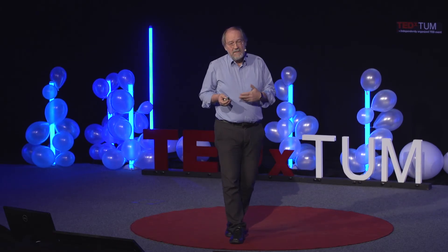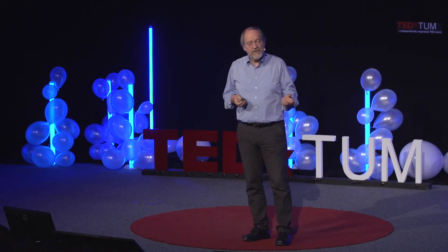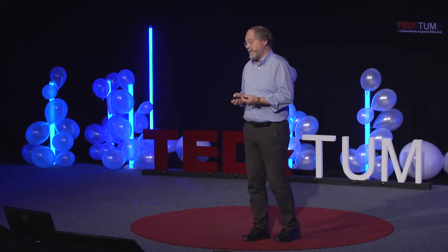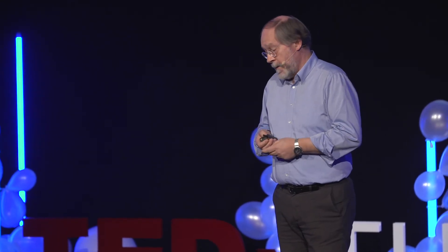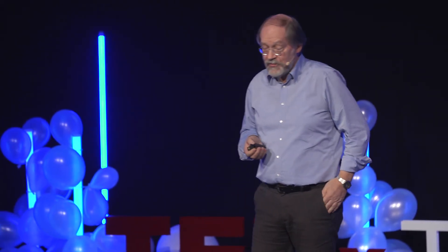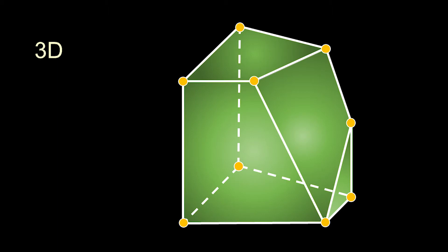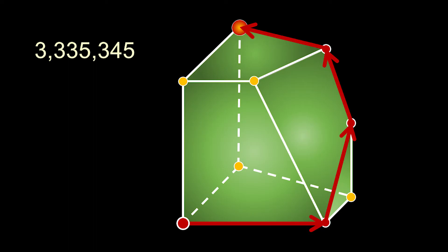Mathematically, the solution comes with a couple of ingredients. One is a way to capture all the districting options in one single object. The second is a precision of what reasonable shape should mean. The third is an algorithm for actually doing the districting. You can identify each districting with a point in one single geometric object. The most reasonable districtings correspond to the vertices. This object, as depicted, lives in three-dimensional space. The districting polytope for Germany lives in somewhat higher dimension — more than three million. However, you can actually solve the problem there: you start from a districting and follow edges of this object to get to an optimum districting.